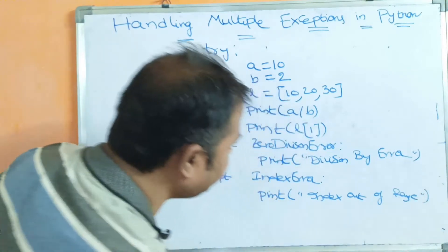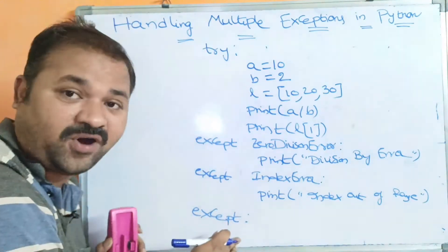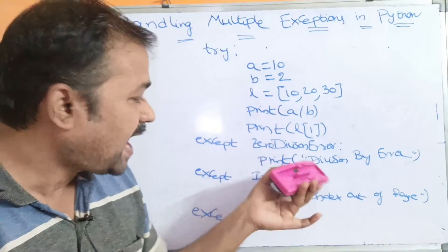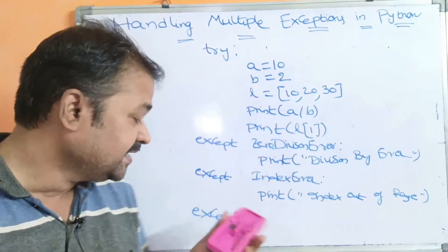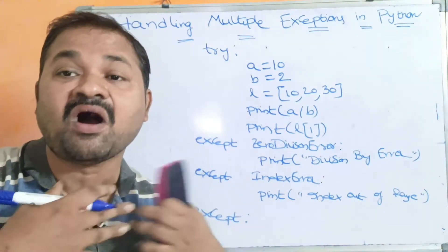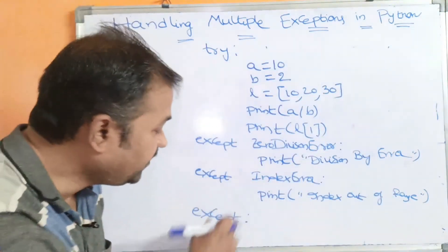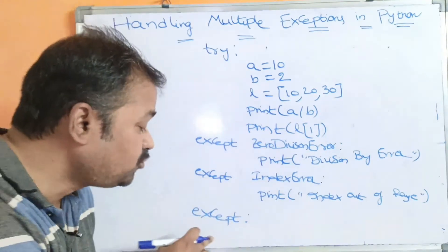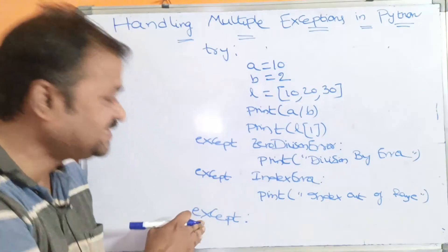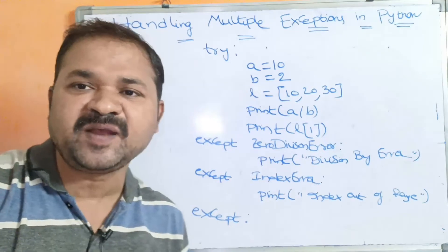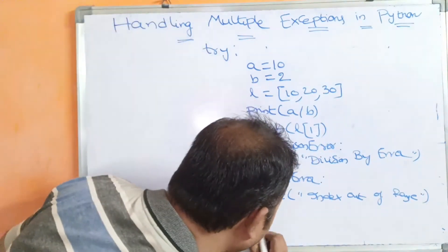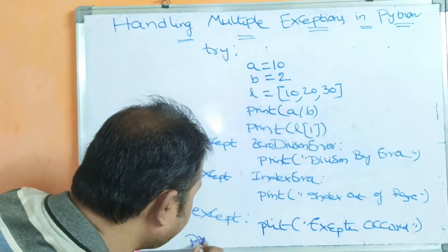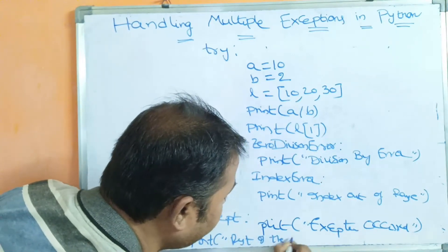We can also write a default except block — this is called the default except block and it can handle any type of exception, whether ZeroDivisionError, IndexError, AttributeError, TypeError, or ValueError. However, it should always be placed as the last except block. We print 'exception occurred' in the default block, and after all except blocks we print 'rest of the program'.